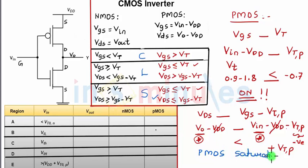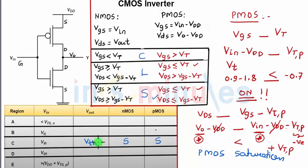So in region C, when the input voltage is at the switching threshold, both the NMOS and PMOS transistors are operating in the saturation region. The output is also equal to the switching threshold, since input equals output at this point.